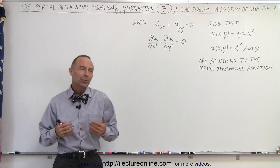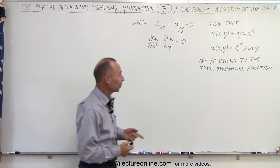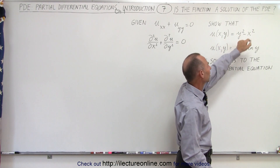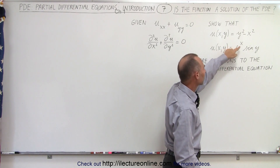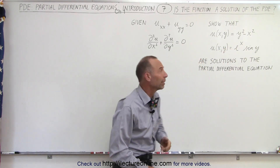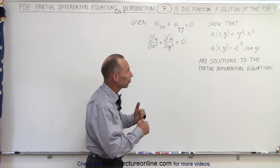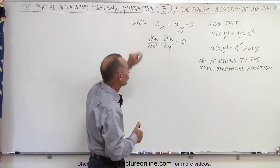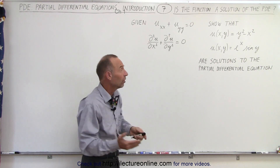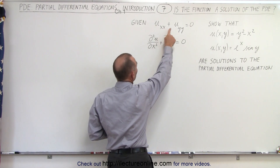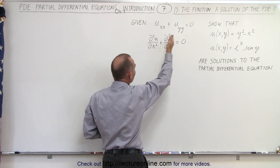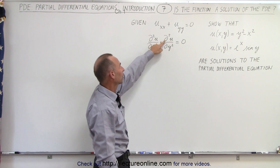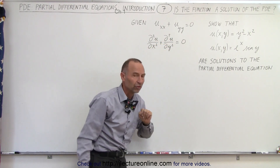Welcome to our lecture online. Here we're given two functions. The first function is a function of x and y defined by y squared minus x squared. The second function is defined as e to the x times the sine of y. In each case there are two independent variables and we're supposed to show that those two functions are indeed solutions to this partial differential equation. The equation is u sub xx plus u sub yy equals zero, or equivalently, the second partial derivative of u with respect to x plus the second partial derivative of u with respect to y equals zero.